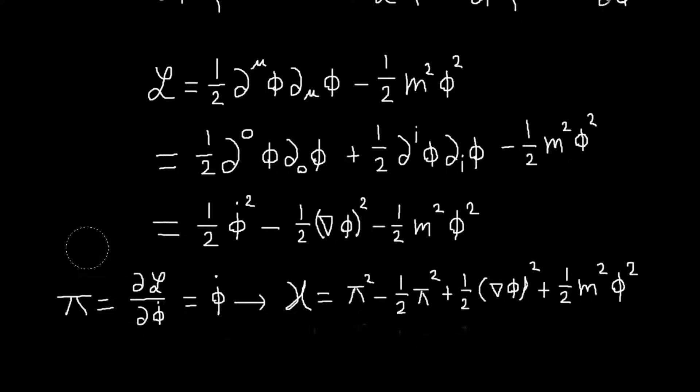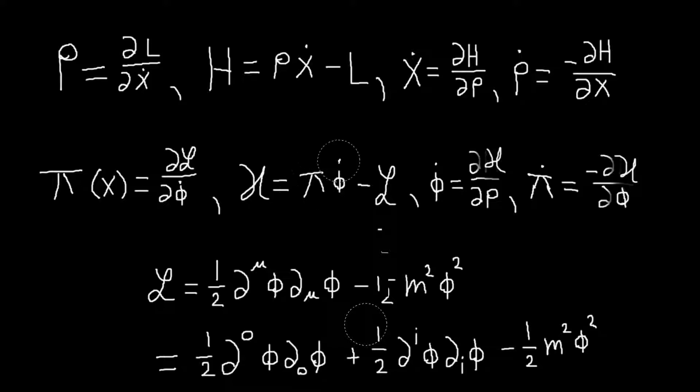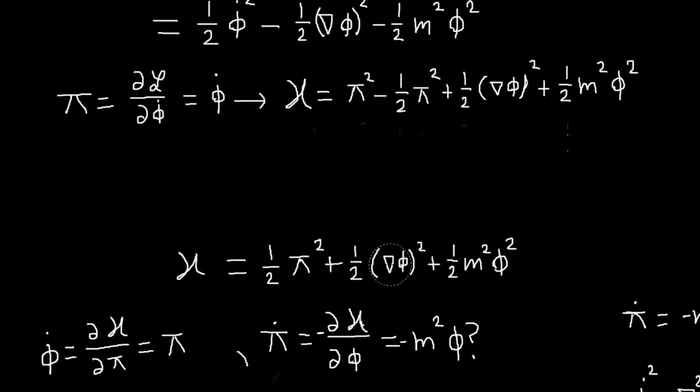So now we can calculate our Hamiltonian density. First we need our conjugate momentum field, which is given by this derivative, which is very easy to do. So pi is just phi dot. And so our Hamiltonian density will just be pi times phi dot, but phi dot is pi, so we get pi squared minus the Lagrangian. So minus all this, and it just works out to be this right here. So this is our Hamiltonian density.